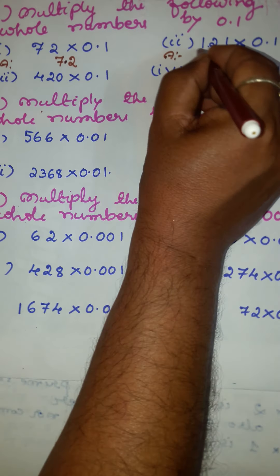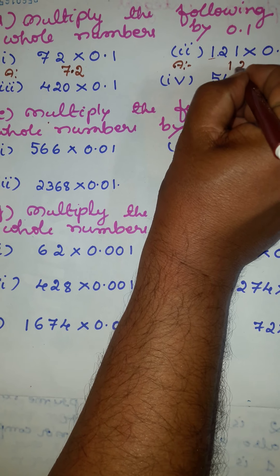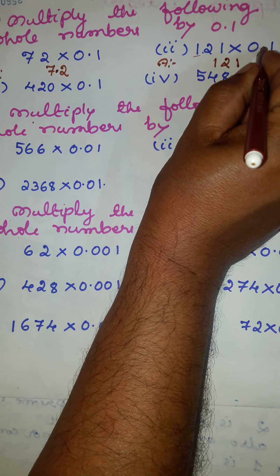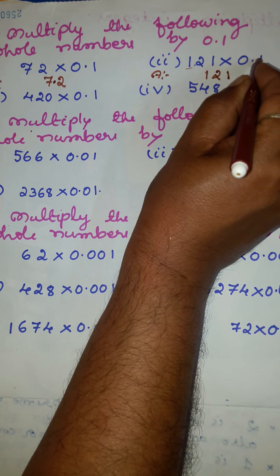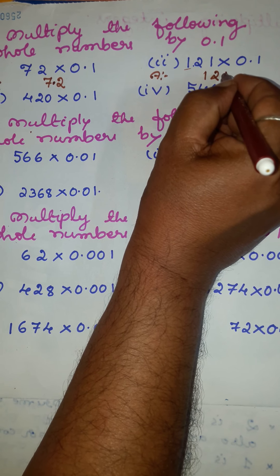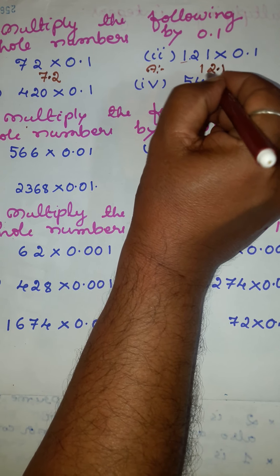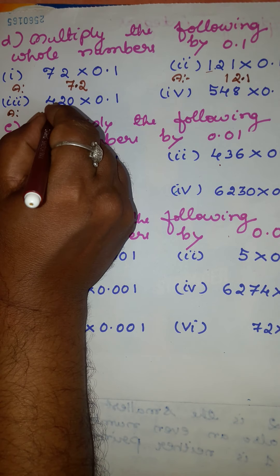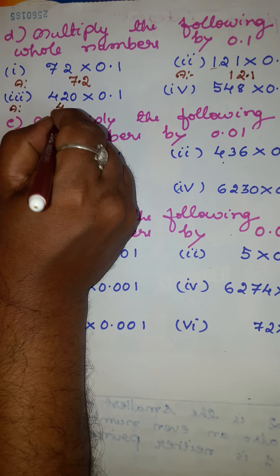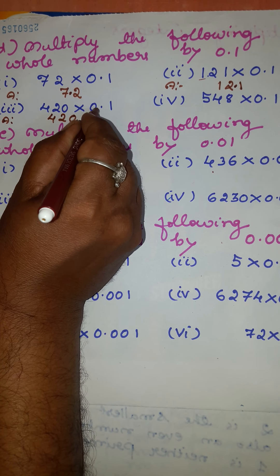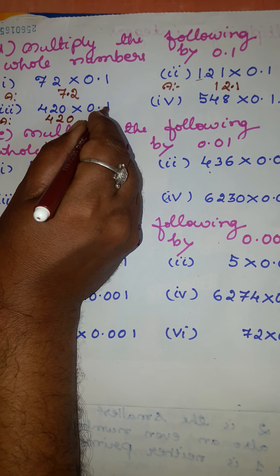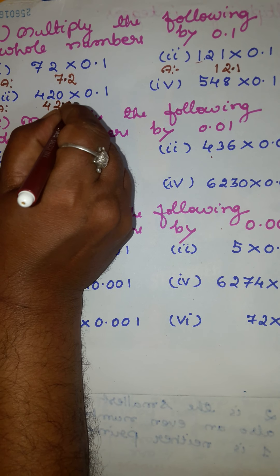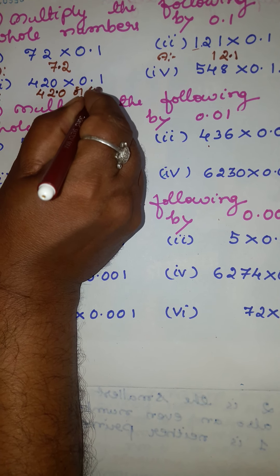Second problem: write this number as 121. After the decimal place to the right there is only one place, therefore you have to move one place from right to left. Put the decimal point — the answer is 12.1. Third example: write this number as 420. After the decimal to the right there is one place, so move one place from right to left. The answer is 42.0, or simply 42, because after the decimal point zero has no significance here.